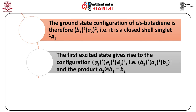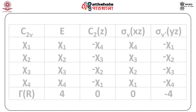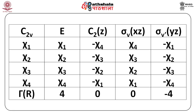The first excited state gives the configuration (b1)²(a2)¹(b1)¹ because one electron is promoted from ψ2 to ψ3. The product a2 × b1 = b2, so there are two resulting states: ¹B2 (singlet) and ³B2 (triplet). Looking at the C2V character table, the ¹A1 → ¹B2 transition is allowed and y-polarized because it behaves like b2. The ¹A1 → ³B2 transition is forbidden by the spin selection rule due to the change in spin multiplicity.